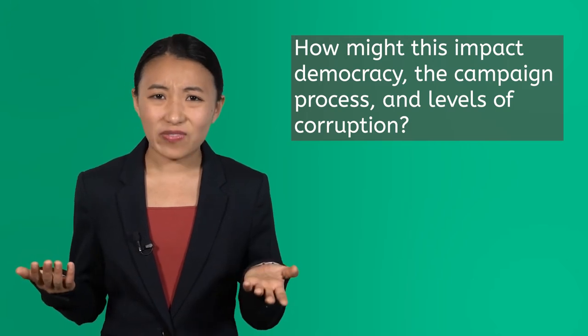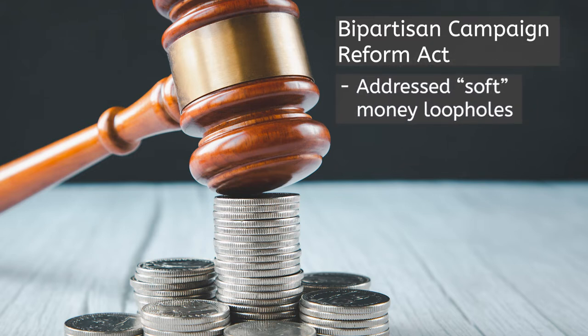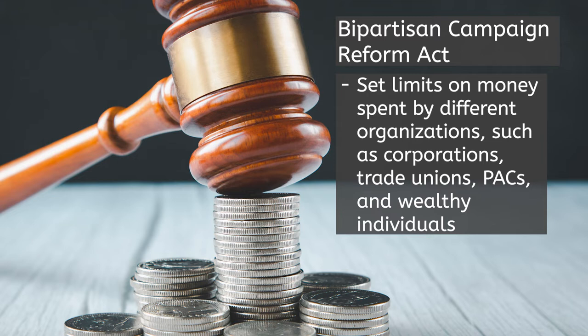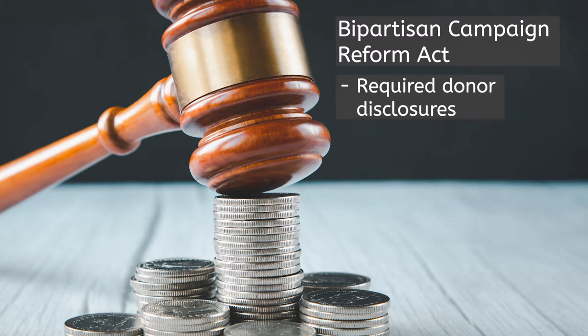These different ways to donate to a campaign have not always been the same. Many pieces of legislation have been drafted, approved, changed, and vetoed when it comes to campaign finance laws. In the 20th century, a serious attempt was made to rein in hard and soft money. The most recent was the Bipartisan Campaign Reform Act. The BCRA was designed to address soft money loopholes, set limits on money spent by corporations, trade unions, PACs, and wealthy individuals, prevented electioneering communications 30 days before a primary and 60 days before a general election, and required donor disclosures.